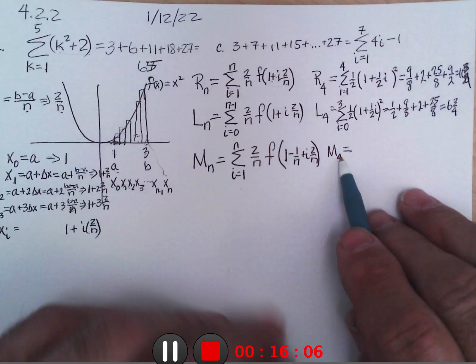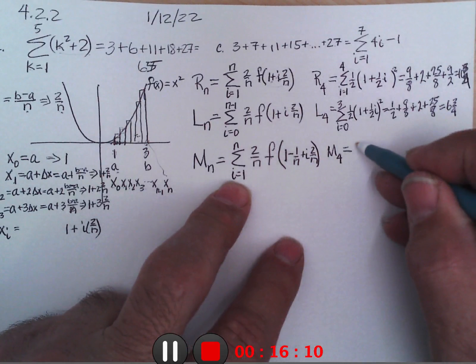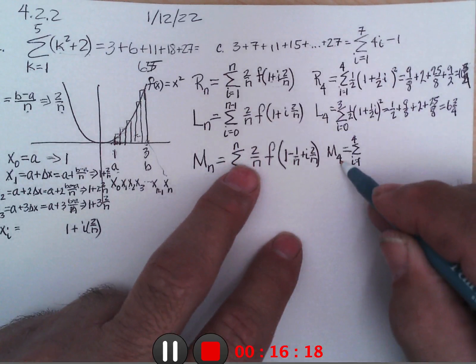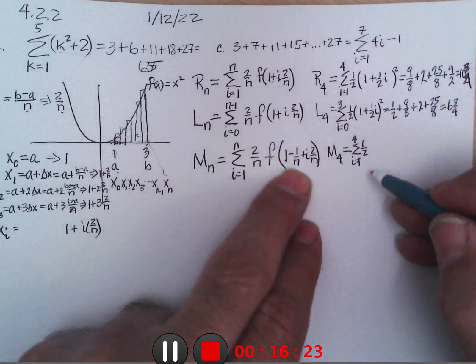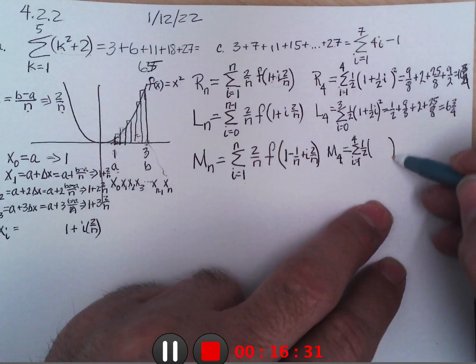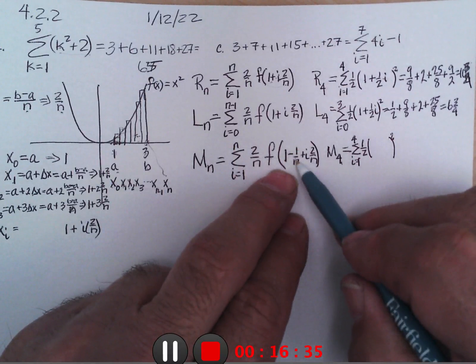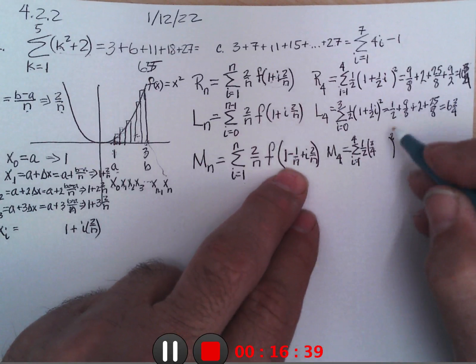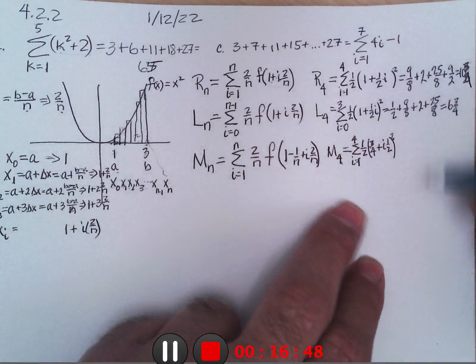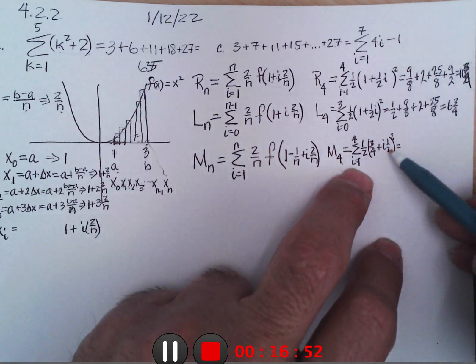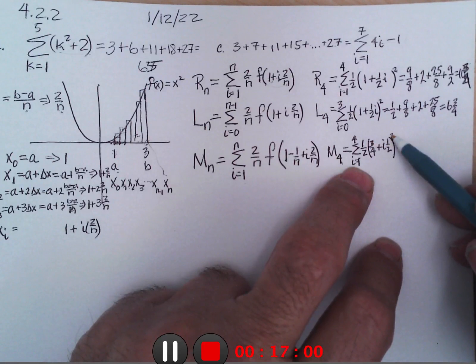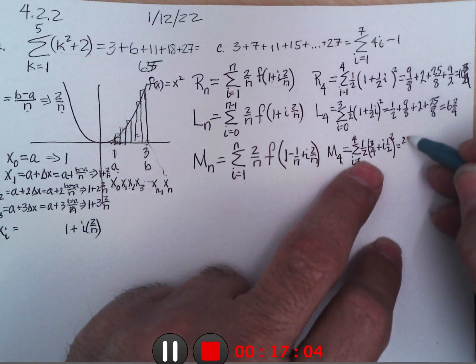What if we do M4? This one's a little bit more complicated. i equaling 1 to 4 since I'm doing 4, 2 over 4 is 1 half. And then f means in this case square them, so I'm going to square what I got in here. And it's going to be 1 minus 1 fourth which is 3 fourths plus i times 1 half.